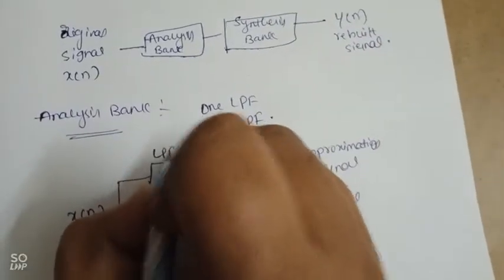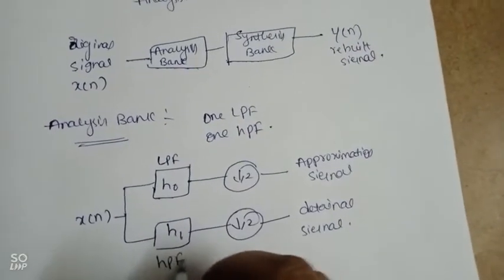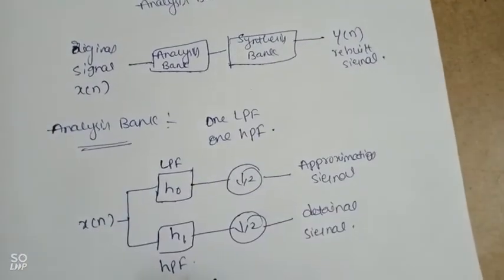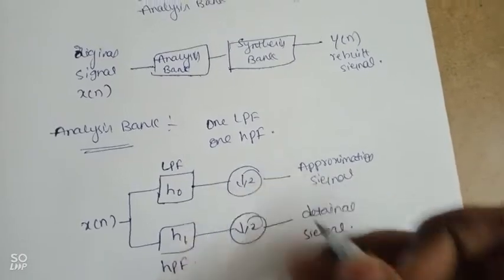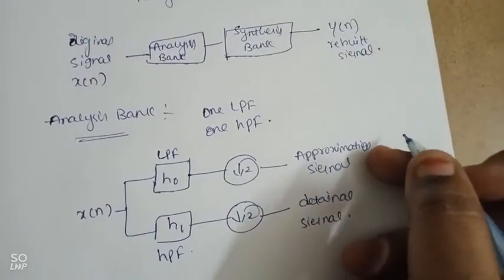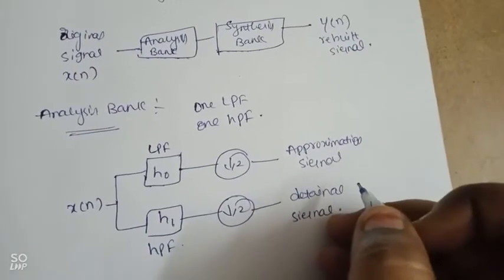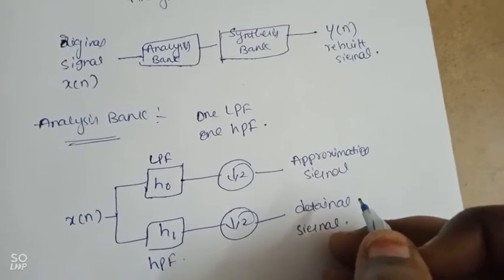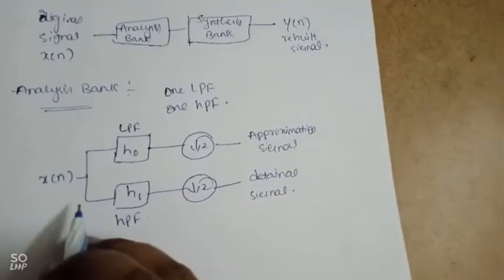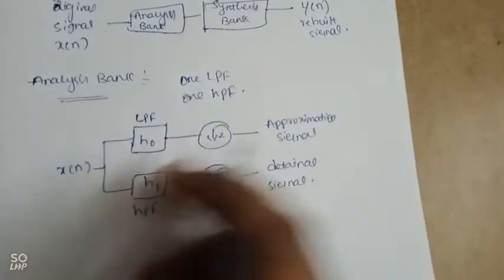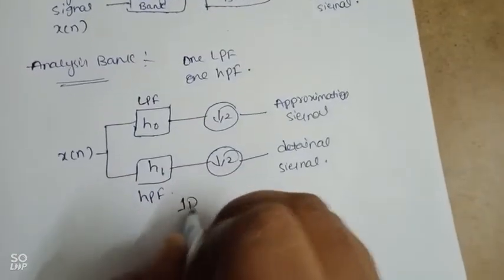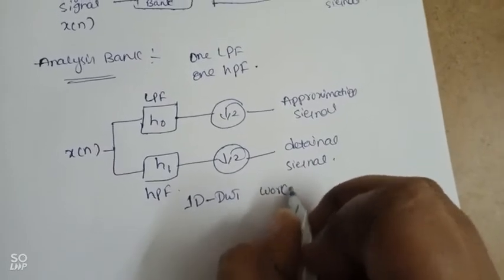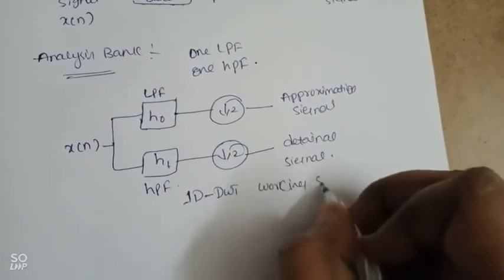In the analysis bank, the original signal has one LPF and one HPF applied, followed by down-sampling. This gives us the approximation signal and the detail signal. This is the working schematic of the one-dimensional discrete wavelet transform.